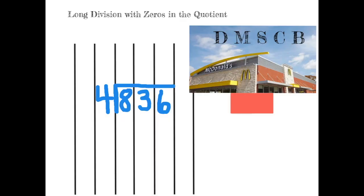This video is going to use the same analogy of McDonald's to solve a long division with zeros in the quotient. All you need to remember is the acronym: Does McDonald's Serve Cheese Burgers? If you can follow those steps, then you can divide a number of any size. This question will divide 836 by 4.